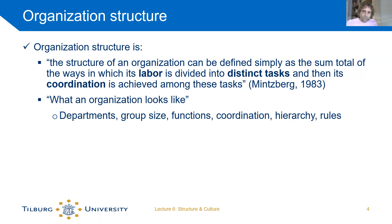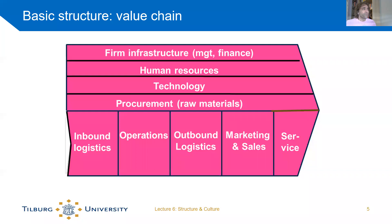The first model is the value chain, which you may remember from last week when we talked about organization strategy. This is a tool with which you can analyze whether your organization is suitable for the proposed strategy — so if you have a certain strategy for the coming years, what do you need in your organization and how do you need to adapt it to make sure that strategy can happen?